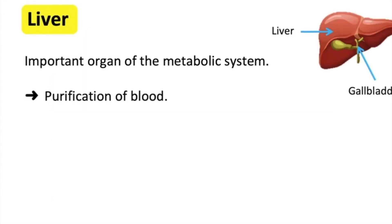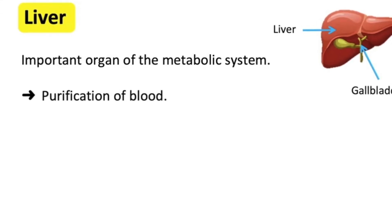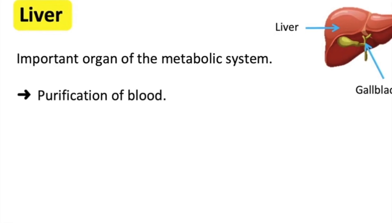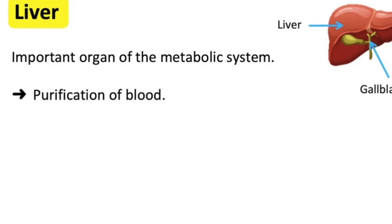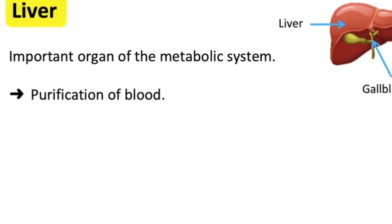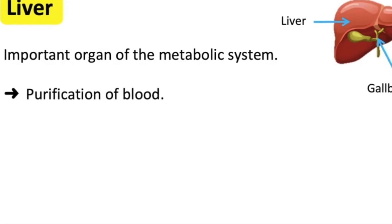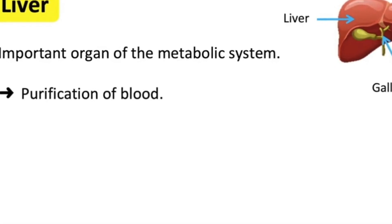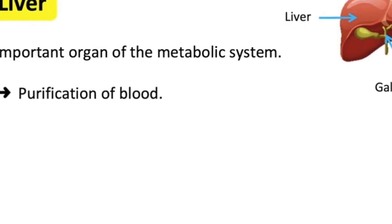Functions of liver. Purification of blood: the liver filters the blood and breaks down harmful substances. The byproducts are excreted into the bile or blood. When harmful products are broken down into bile, they leave the body with stool. When harmful substances are broken down in the bloodstream, they are filtered in the kidneys and leave the body with urine.